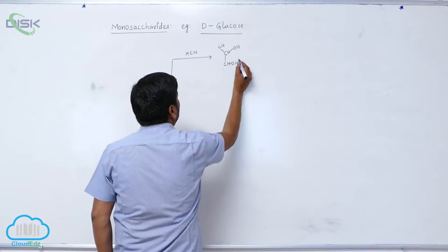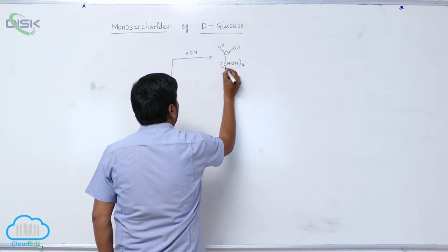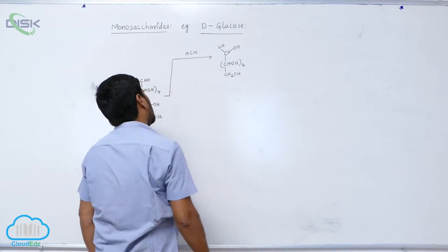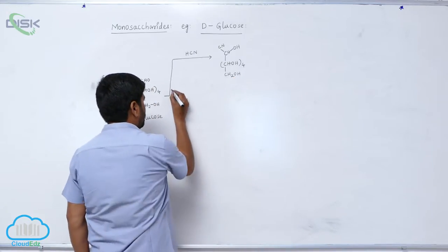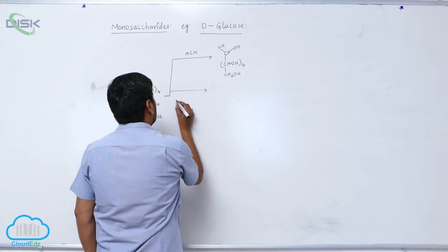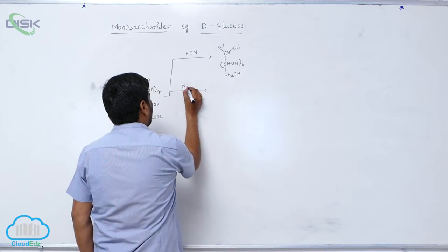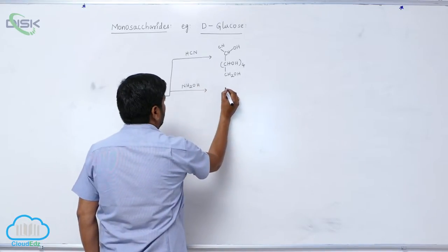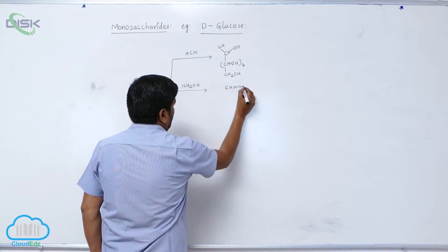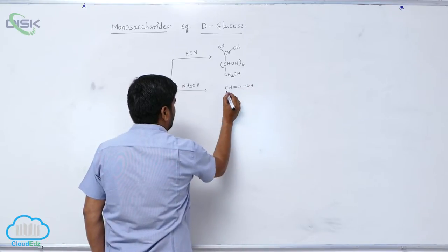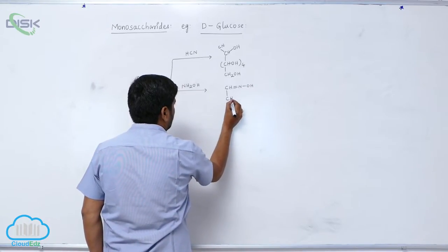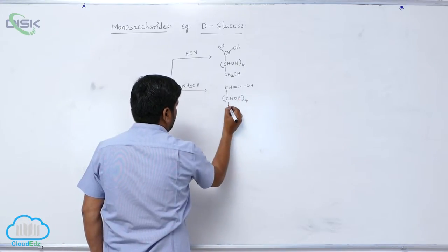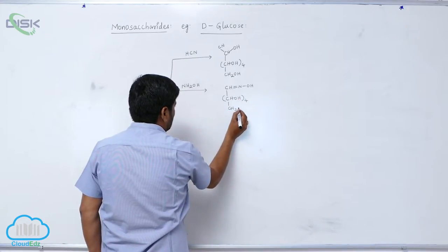CHOH arrays four times then CH2OH - this is the cyanohydrin reaction. It reacts with hydroxylamine to form CH double bond NOH oxide, CHOH arrays four times then CH2OH.